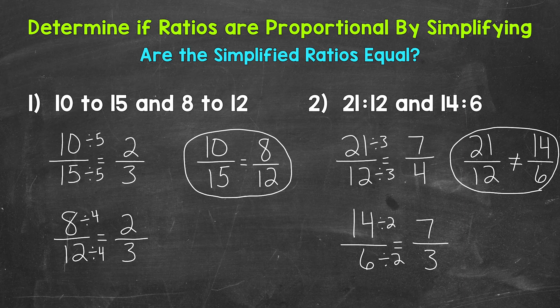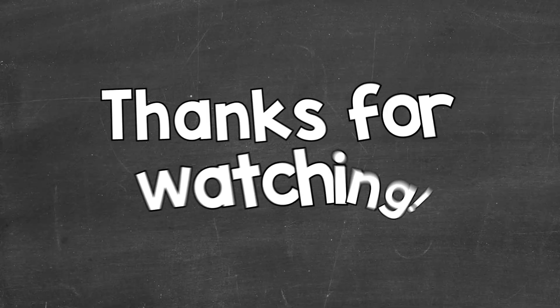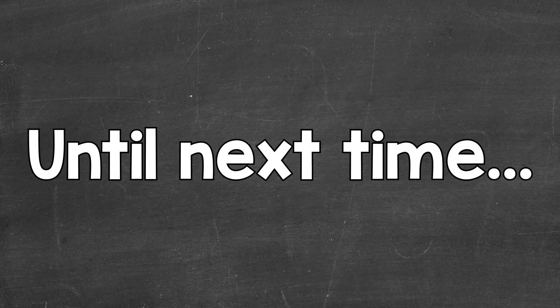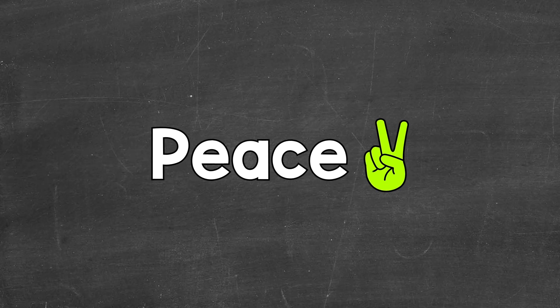So there you have it — that's how you determine if ratios are proportional by simplifying. Simplify each ratio. If the ratios simplify to the same ratio, they are proportional. If they don't simplify to the same ratio, they are not proportional. I hope that helped. Thanks so much for watching. Until next time, peace.